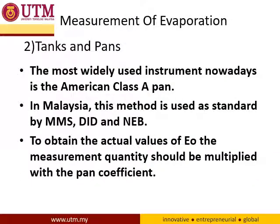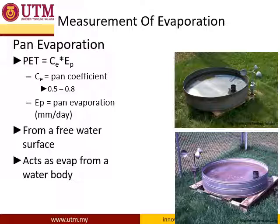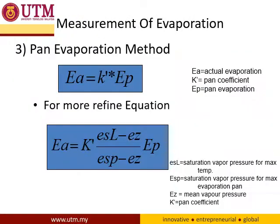Another way to measure evaporation is using equipment — tanks and pans. This is widely used, and in Malaysia this method is used. The actual evaporation value should be multiplied by a pan coefficient. There is a manual for the Malaysia case that you can refer to. The pan evaporation method is just a pan with some water inside; we measure how much water is lost to get the evaporation. The actual evaporation is obtained by multiplying the pan evaporation reading by the pan coefficient, which is derived from observation data.